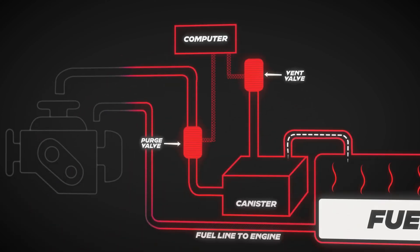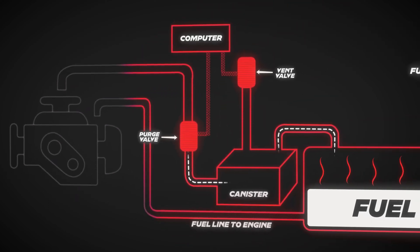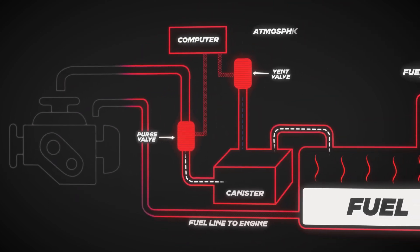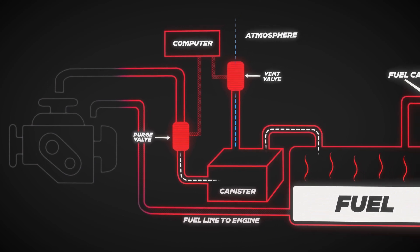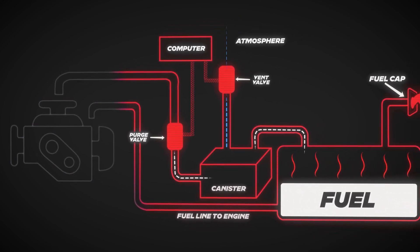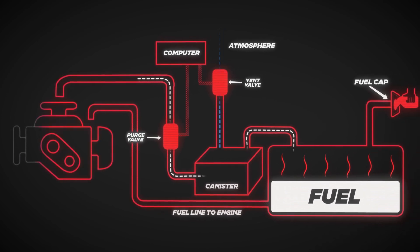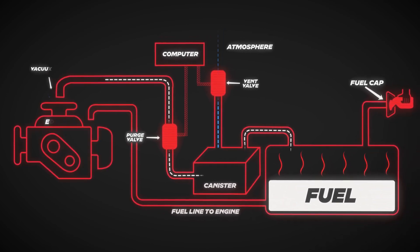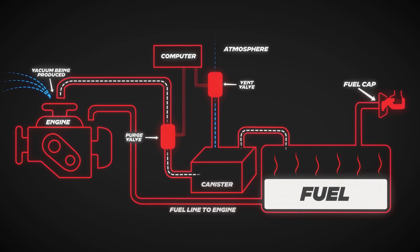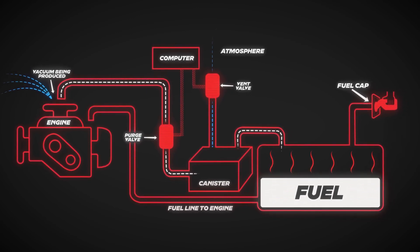During operation of the EVAP system, the purge valve will open, which begins to pull in the vapors from the canister. During this time, the vent valve will also be opened to allow atmospheric air into the system to compensate for the vacuum created. As the vapors travel through the system, they pass through the purge valve and enter into the combustion chamber of the engine. Once the vapors are in the chamber, they are ignited and processed, completing the EVAP cycle.